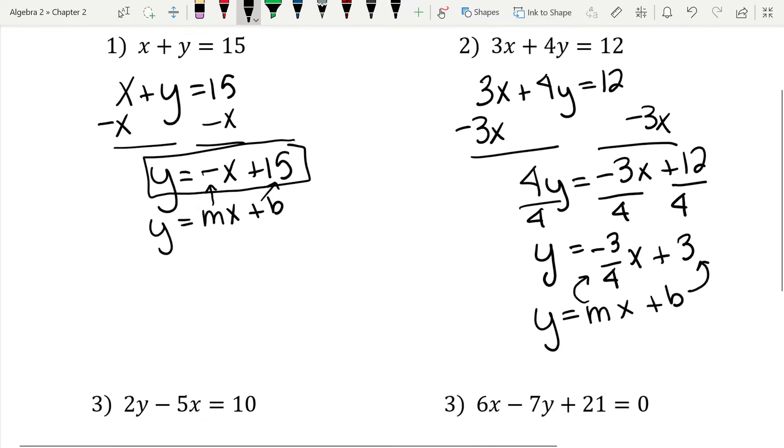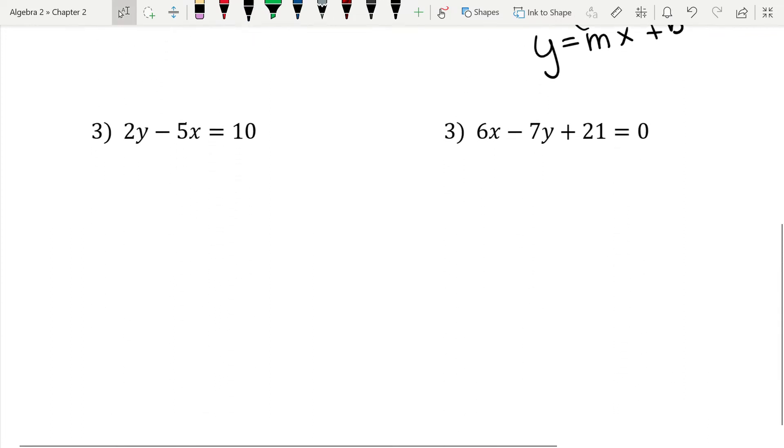I have two more for us. Let's look at number 3. 2y minus 5x equals 10. I'm going to rewrite it. So 2y minus 5x equals 10. Now, once again, we want to get the y by itself. That means we want to get rid of the subtract 5x or the negative 5x. So the opposite of subtract 5x is adding 5x. And I'm going to do that to both sides of the equal sign.